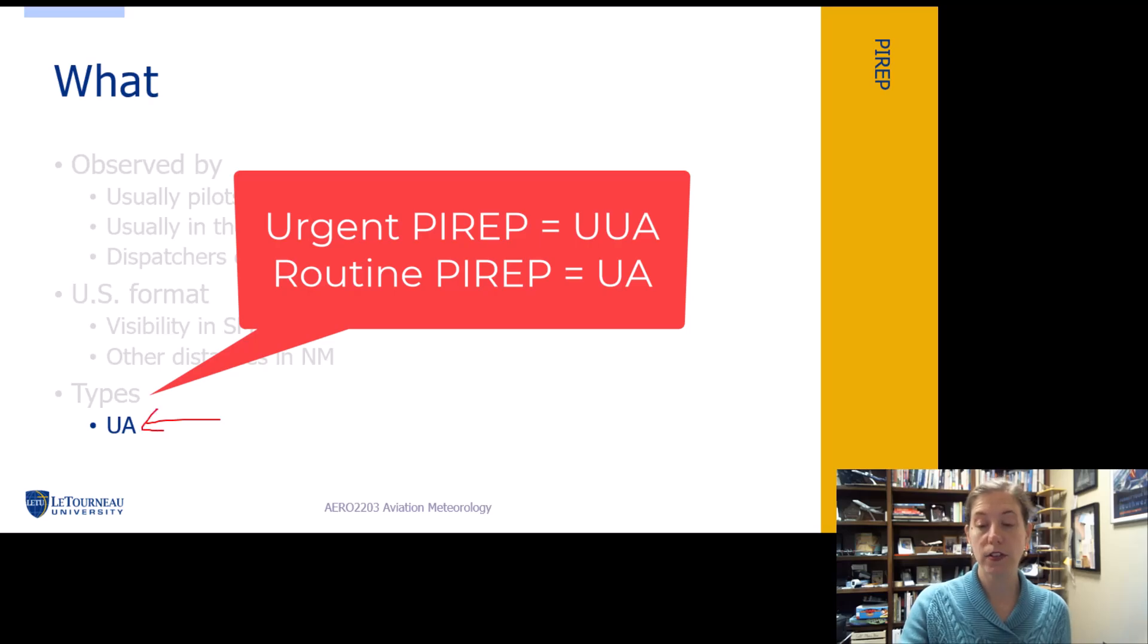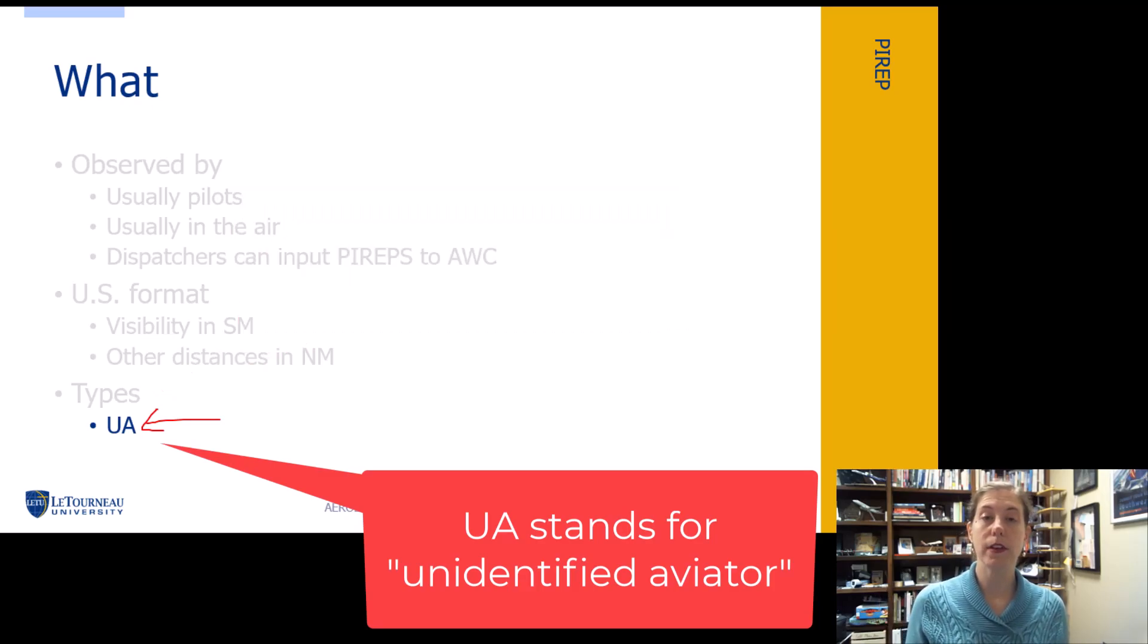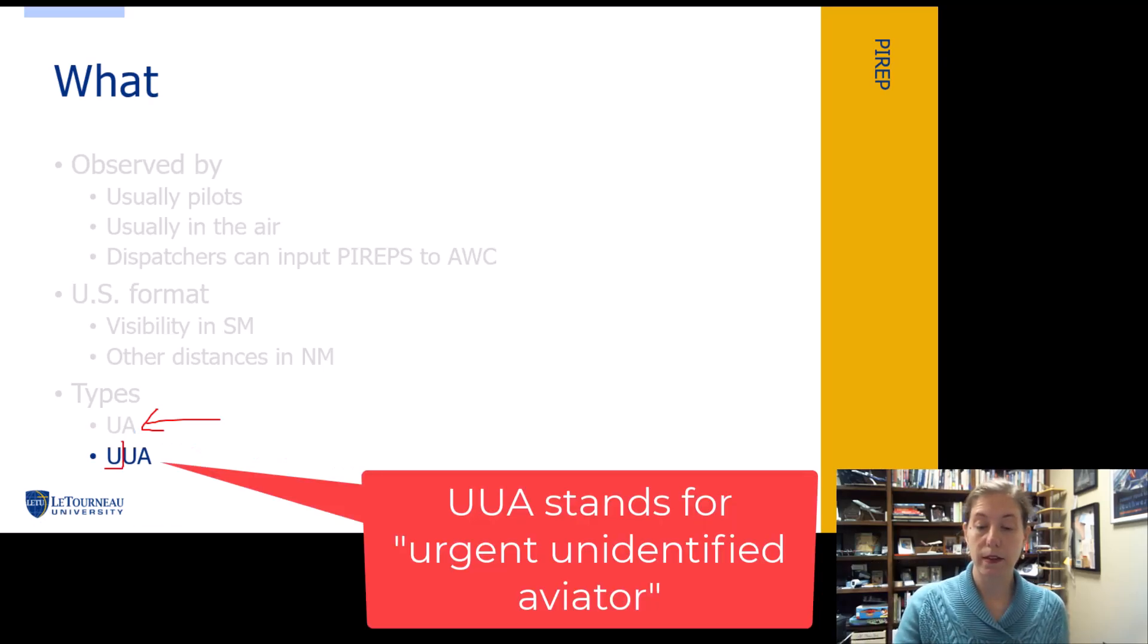UA actually stands for unidentified aviator. This goes back to when we didn't know who was giving the pilot report. An unidentified aviator gave that pilot report. The UUA, the U at the beginning stands for urgent. So this meant urgent unidentified aviator. This is how this information is encoded. If you see a UUA, that's going to be an urgent pilot report.